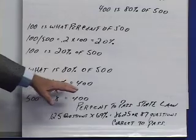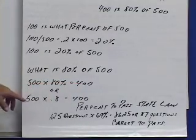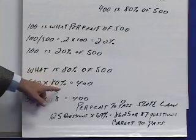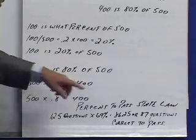So 500 times 80% equals 400. In your calculator you would put 500 times 80, hit the percent button, not the equal button, just the percent button, and that will give you the answer 400.